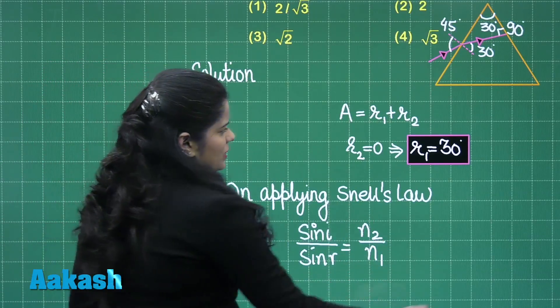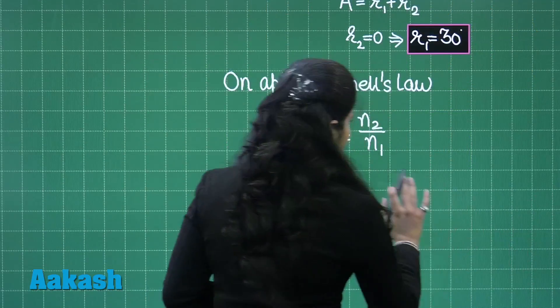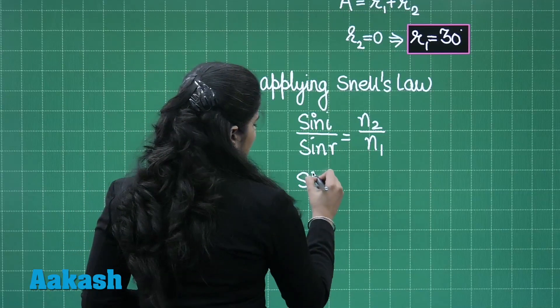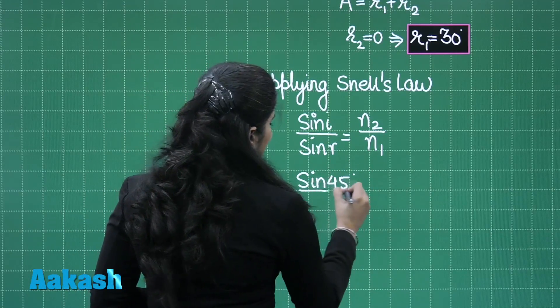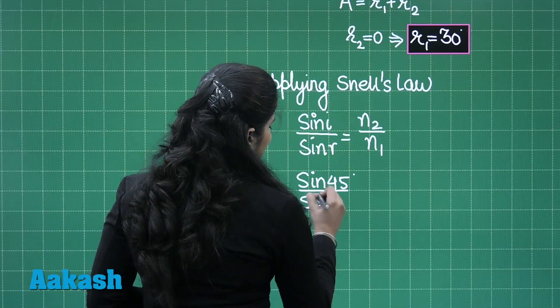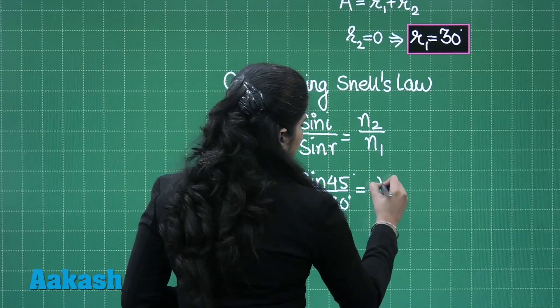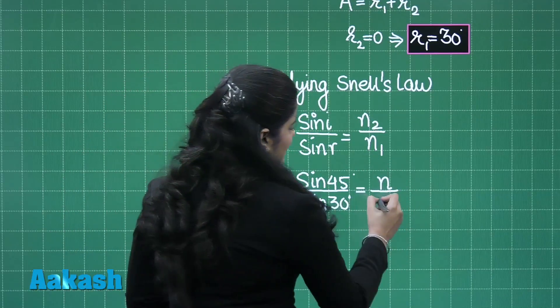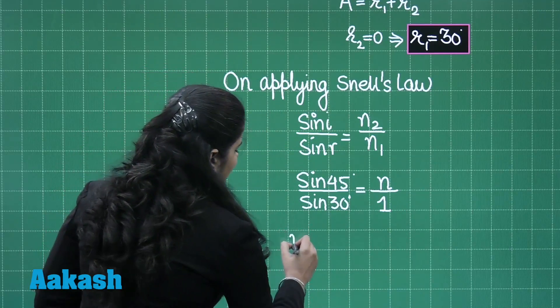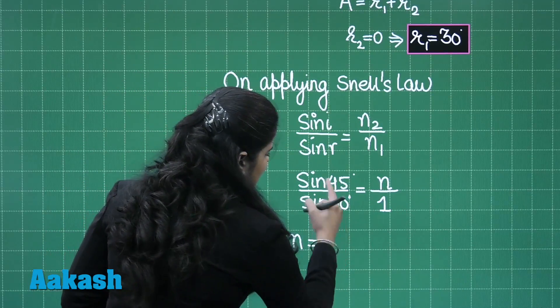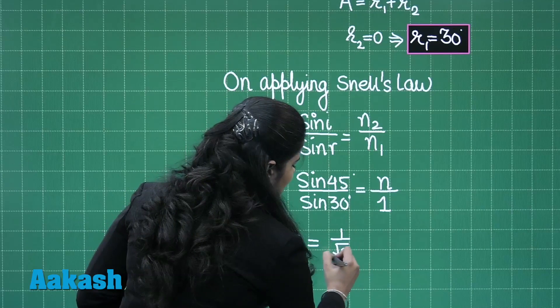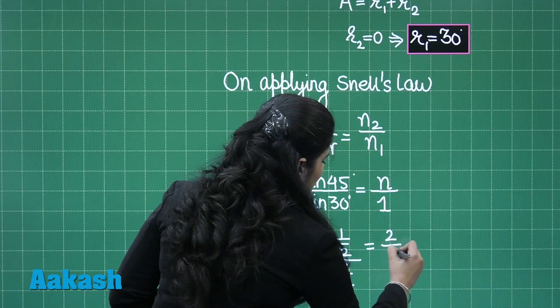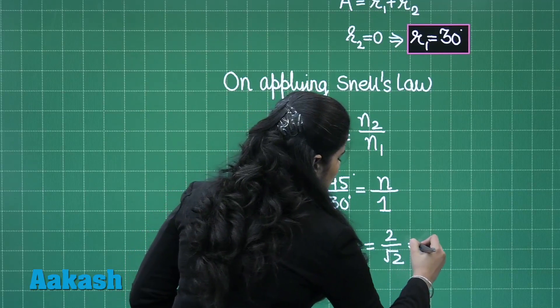N2 we need to find out. I will substitute the values. So it is sin 45 divided by sin 30. I am taking the refractive index of the prism to be N, and N1 is 1. So N will come out to be sin 45, that is 1 by root 2, and sin 30 is 1 by 2. So it will be 2 by root 2, that is root 2.